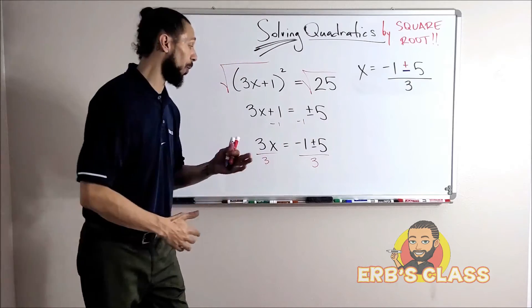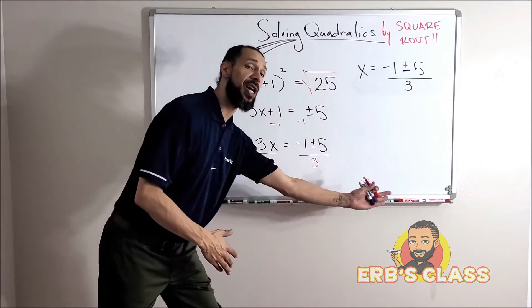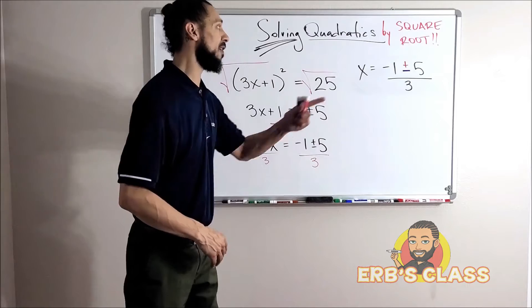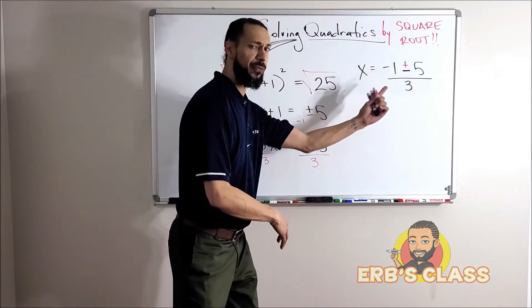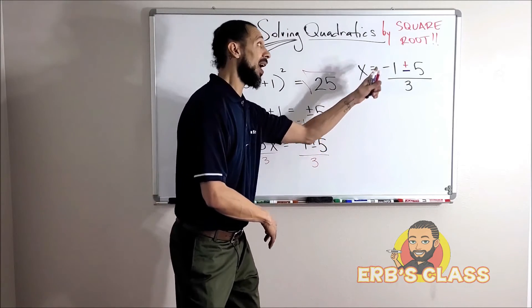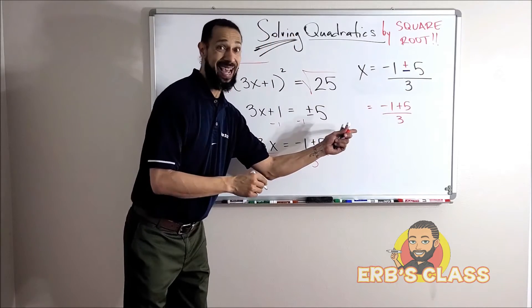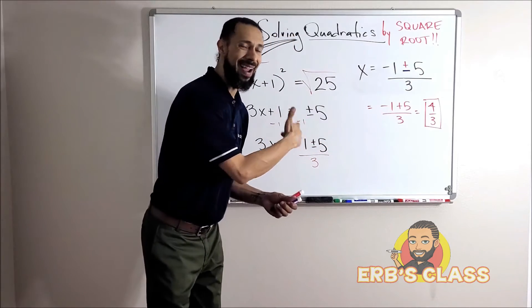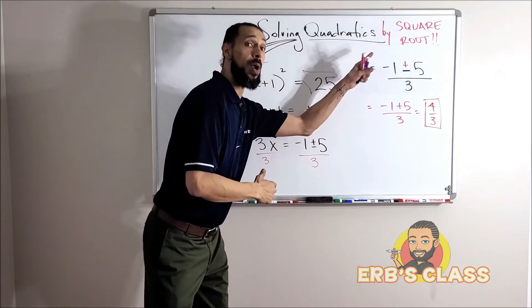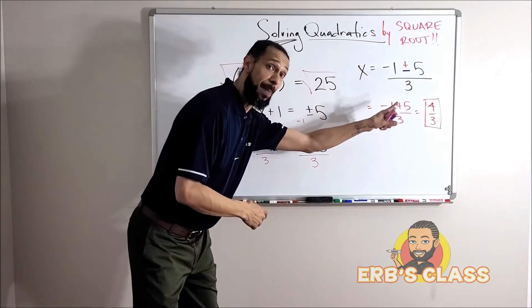Good, let's get a better look at this over there. When I divide by three, remember to put that fraction line under everything. Remember that this is two different numbers: I got negative one plus five all divided by three, and that equals good. And then don't forget I also have negative one minus five all divided by three, and that equals good. And there goes our two answers. Well done.